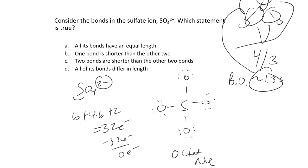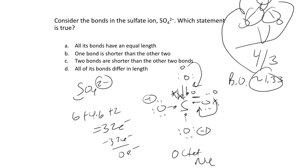If we want to minimize magnitudes of formal charge, we notice sulfur has a plus-two formal charge. We make a double bond to kick it down to plus one, and the formerly minus-one O becomes zero. We can do this again with another oxygen, bringing sulfur's formal charge to zero. We could sketch all permutations — putting the double bond in different positions — but I won't draw them all out.